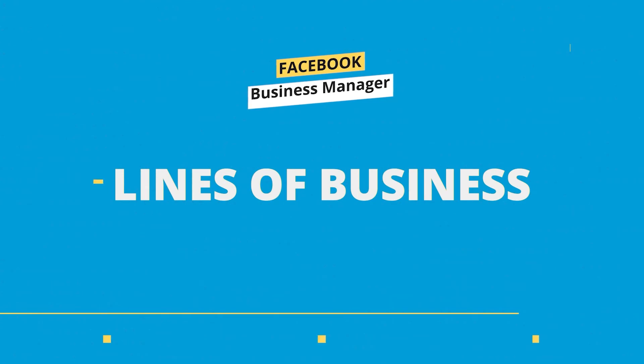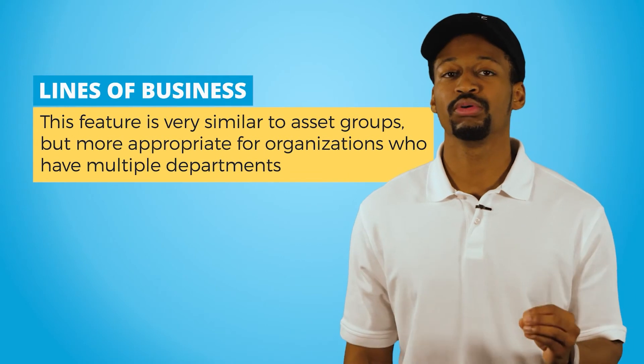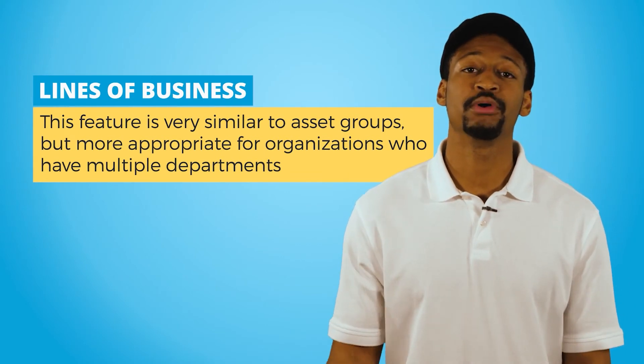The last feature I want to talk about is feature number 14: lines of business. This feature is very similar to asset groups, but more appropriate for organizations that have multiple departments. For example, you may have a product team, a sales team, and a marketing team. Each one of these departments will require different asset assignments, which lines of business makes it super easy for you to set up. These are two pretty advanced features, usually reserved for those who have lots of assets that need to be organized.